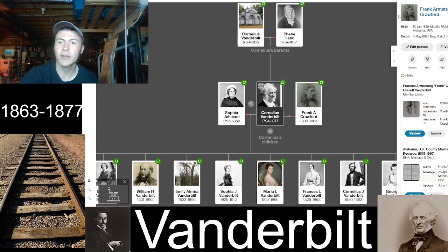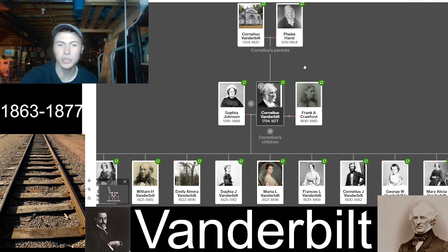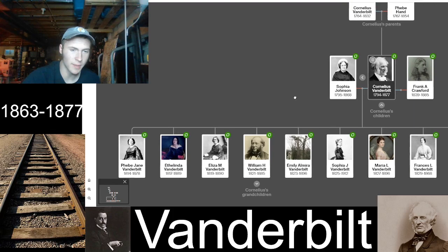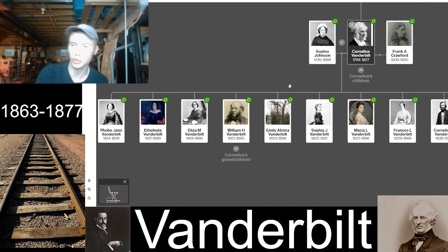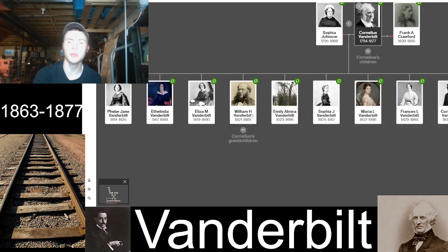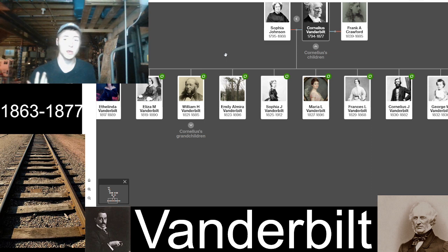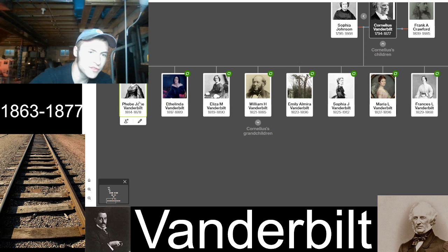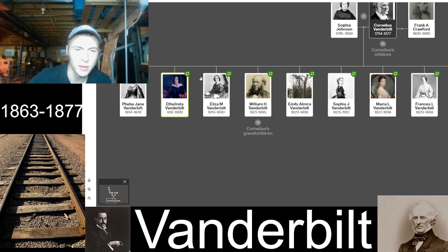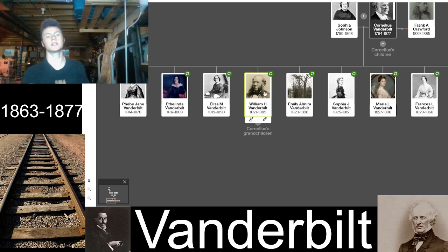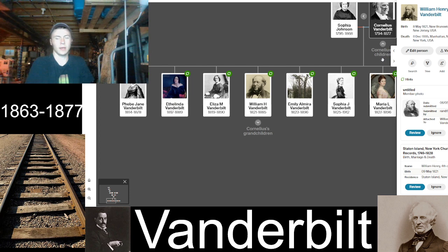Here are all of Cornelius Vanderbilt's children. I'm not going to go through every date — you can see the years on screen. I only trace the Vanderbilt name down through his sons, since daughters don't carry it forward. His eldest child was Phoebe Jane Vanderbilt, born 1814, followed by Ethelinda Vanderbilt and Elizabeth (Eliza) Vanderbilt. His first son, and fourth child, was William Henry Vanderbilt, born May 1821 in New Jersey, died December 8th, 1885.